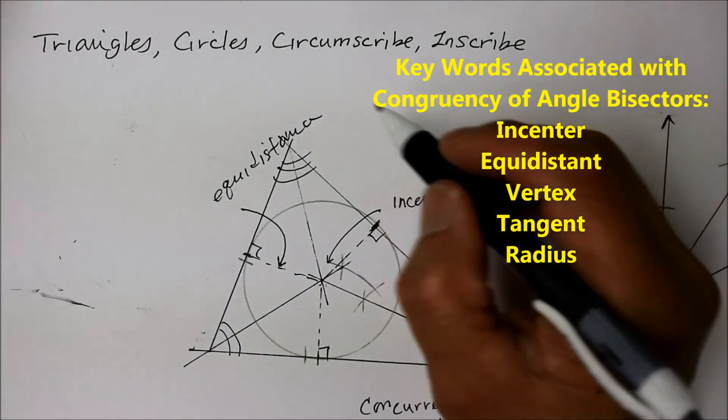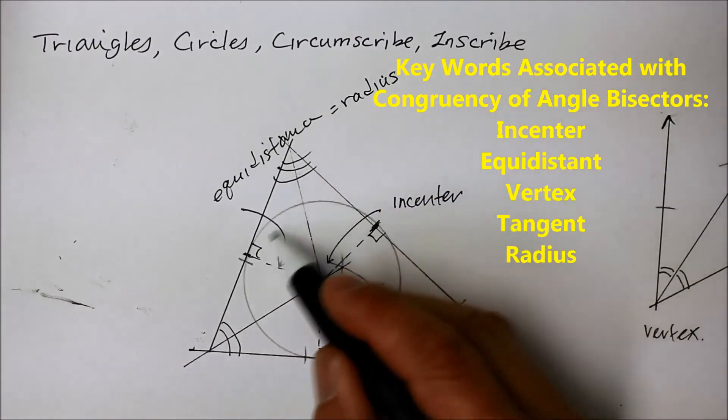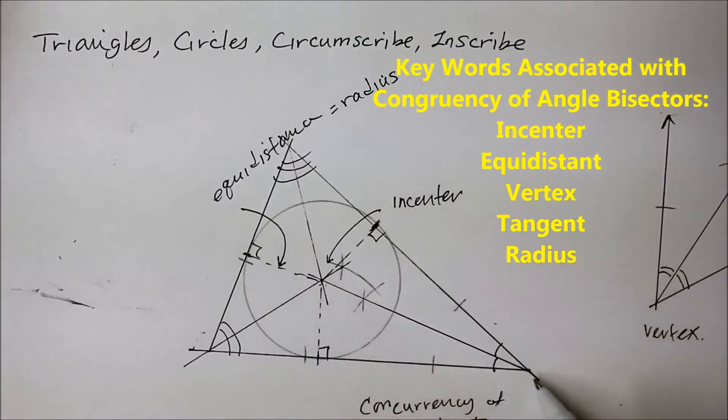And that, in fact, becomes the radius of the circle that's inscribed inside this triangle using the technique of angle bisector.